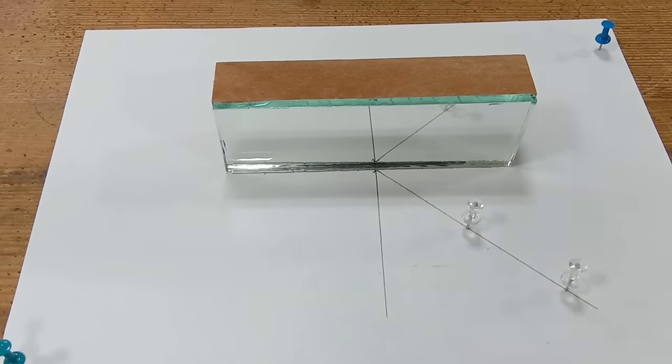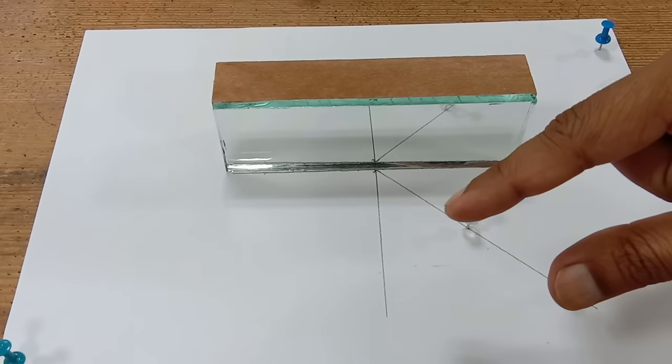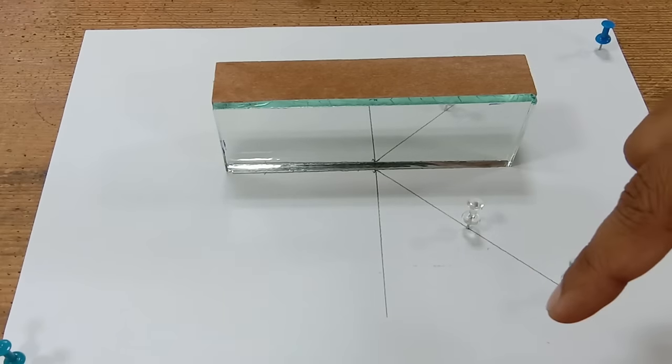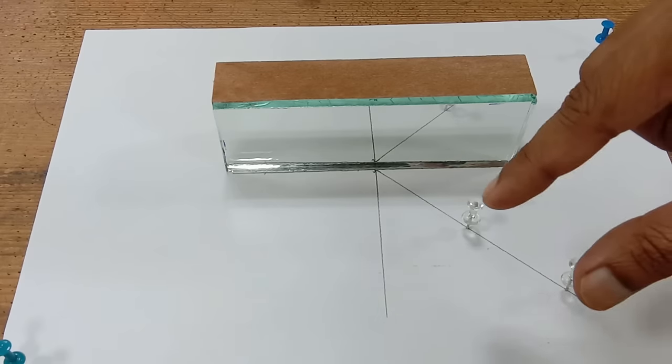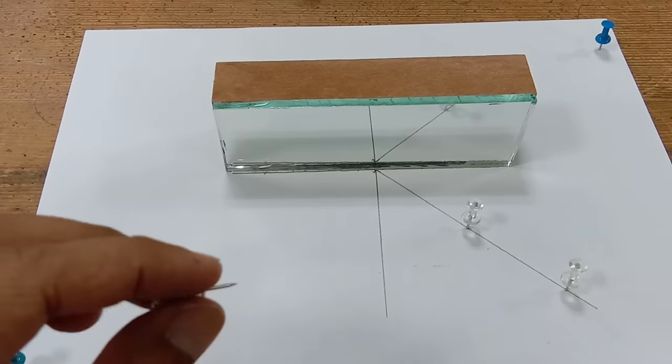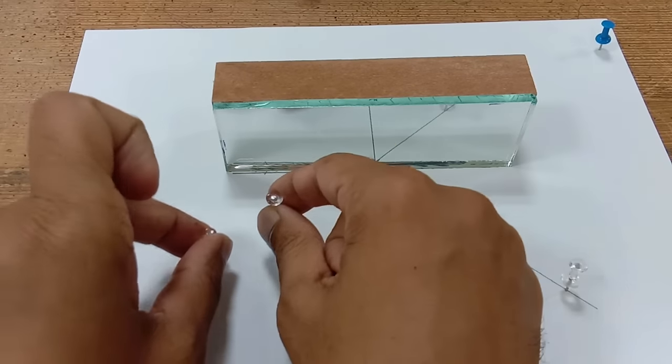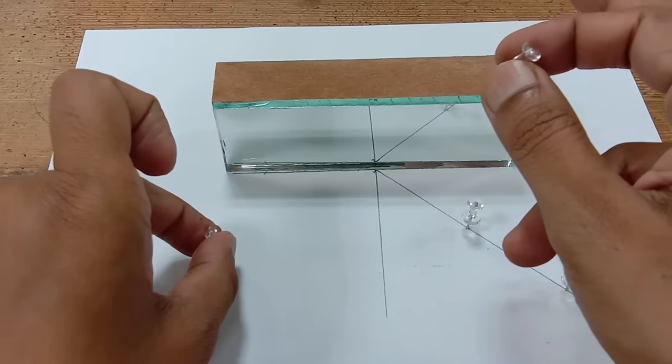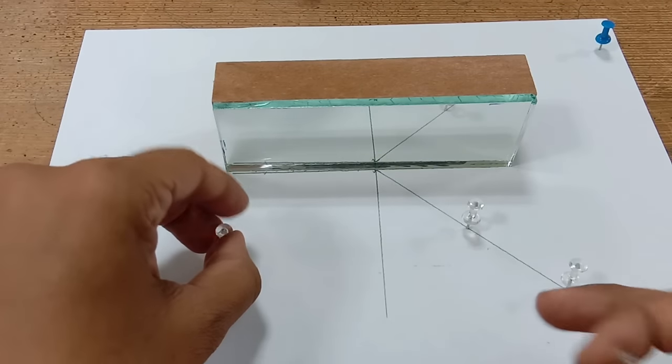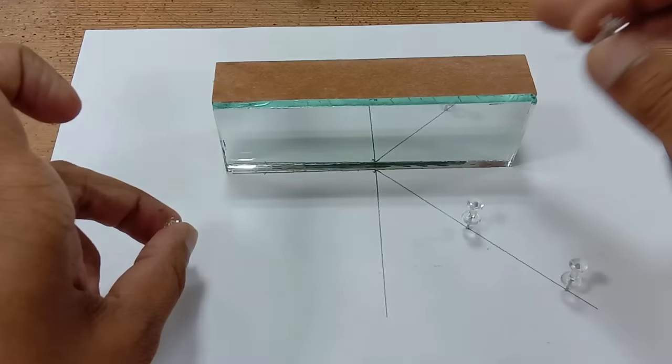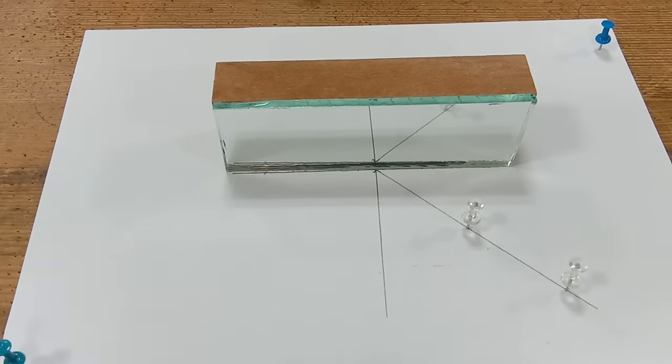See, the images of these two pins will be visible in the mirror on the back side. So you will have two images of these two pins over here. Now what I'm going to do is take another two pins and arrange these two pins somewhere over here such that all four pins—two real pins and the other two images—appear in straight line. So these two pins, their images, and these two pins all four appear to be in straight line.